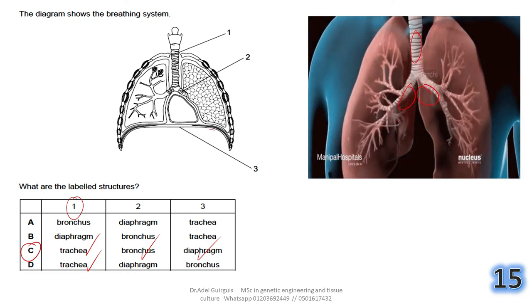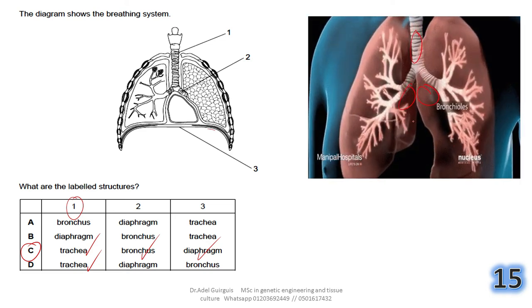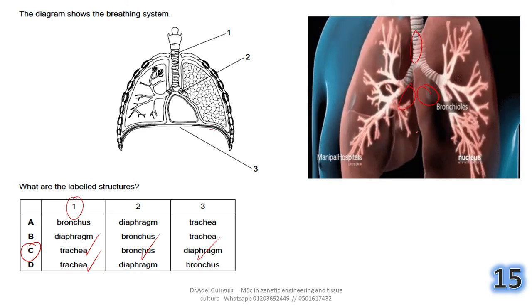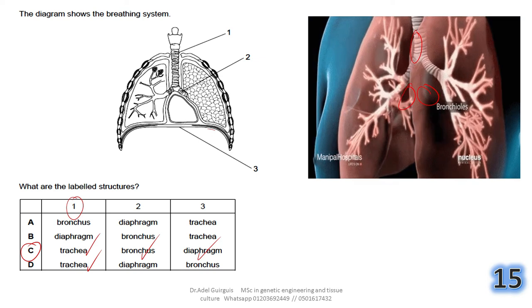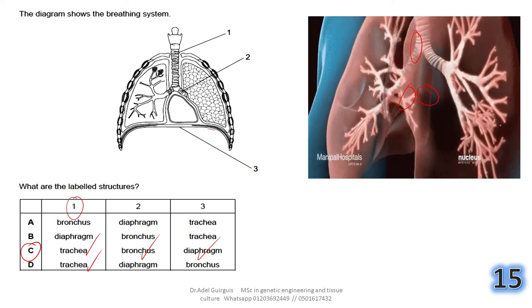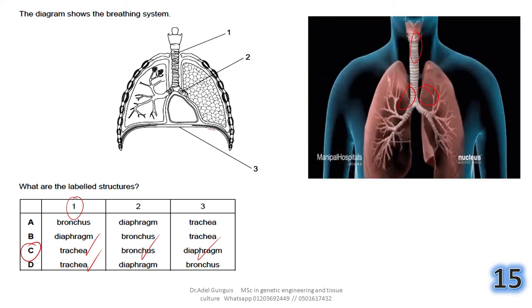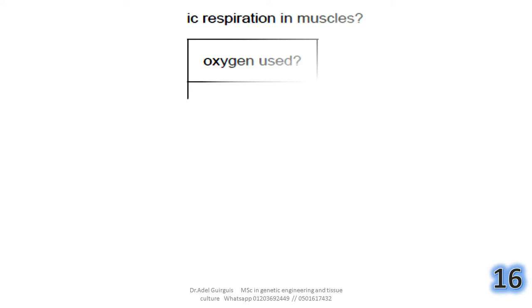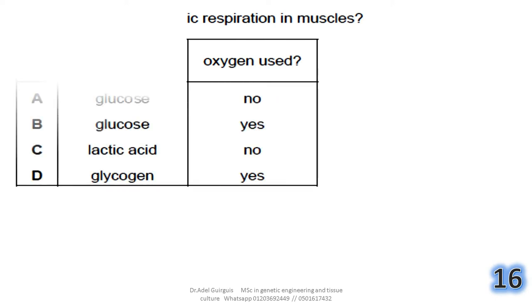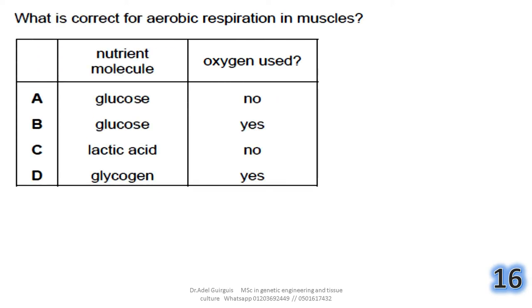A short video shows alveoli surrounded by a network of blood capillaries; bronchioles connect to alveoli, leading to the bronchus, then the trachea. In the reverse direction — when air is breathed out — we start from the alveoli upwards.